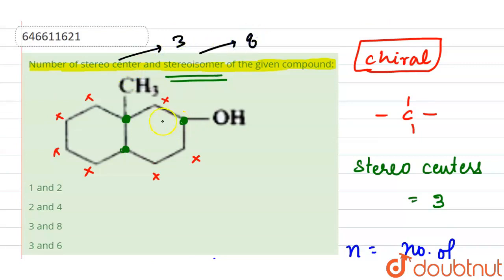If we see this carbon, how is this a stereocenter? This whole group is different, this whole group is different, one methyl and one hydrogen. Same goes here - this is different, this is different, one hydrogen. So our answer will be three and eight.